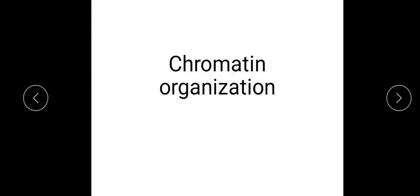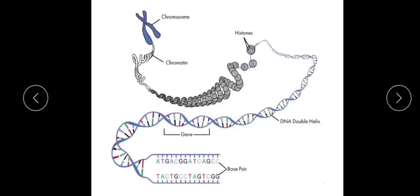Welcome to today's session. Today let us learn the topic chromatin organization. This figure, which we have gone through in our previous video, clearly explains how a double helical DNA has to coil or pack through several folds to achieve this organization. This is the chromosome — I'm sure you have learned the difference between chromosome, chromatin, and chromatids.